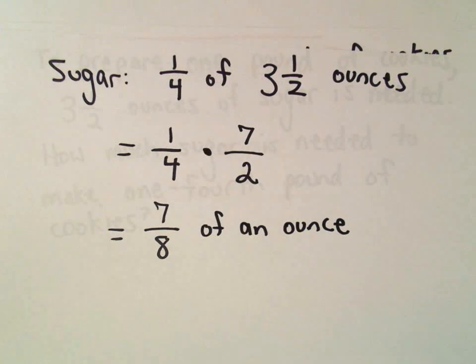So we'll need a little bit less than one ounce of sugar to make this quarter pound of cookies.